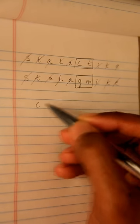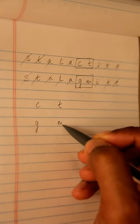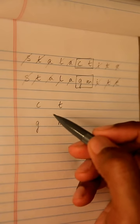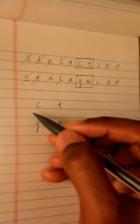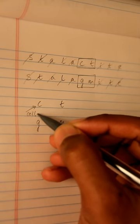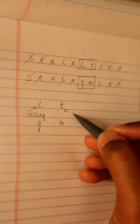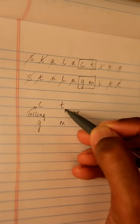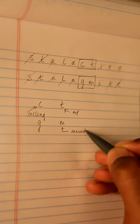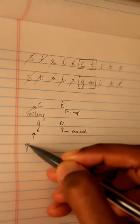So I wrote these letters out separately, CT, GM, and what I did was I associated the letter C with ceiling and the letter T with top, the letter M with mound, and the letter G with ground.